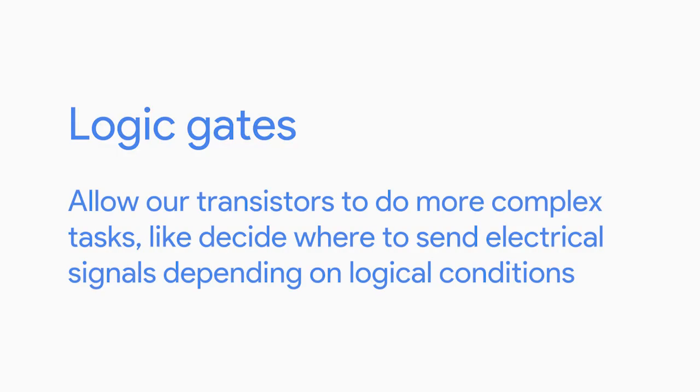Fortunately, we have something known as logic gates. Logic gates allow our transistors to do more complex tasks, like deciding where to send electrical signals depending on logical conditions. There are lots of different types of logic gates, but we won't discuss them in detail here. If you're curious about the role that transistors and logic gates play in modern circuitry, you can read more about it in the supplementary reading.